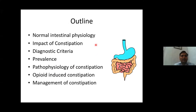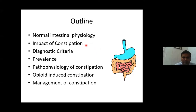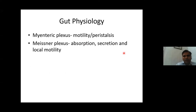Here is my brief outline: intestinal physiology, impact of constipation, diagnostic criteria, prevalence, pathophysiology, opiate-induced constipation, and management of constipation. Starting with a little bit about gut physiology — the gut is mainly controlled by the enteric nervous system.